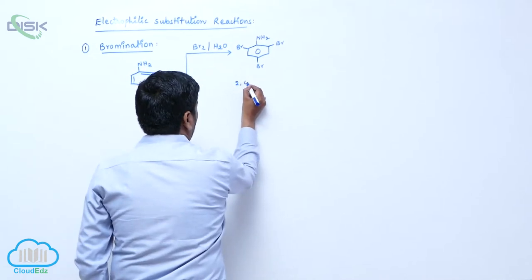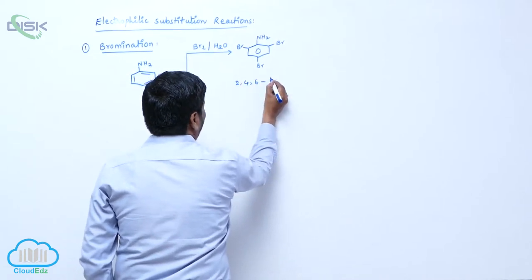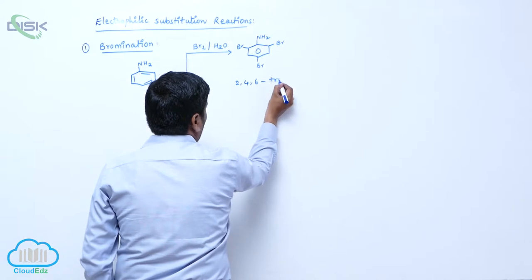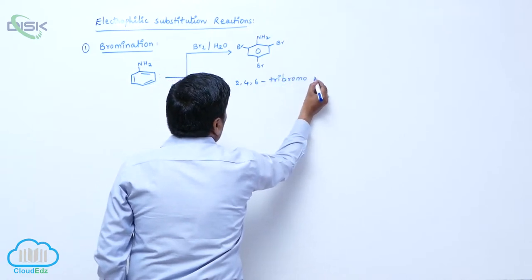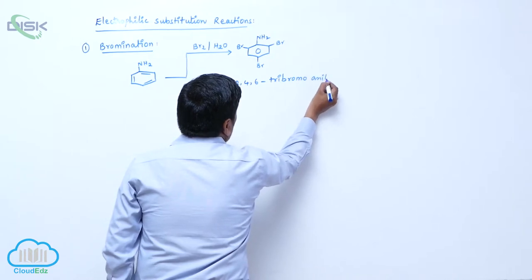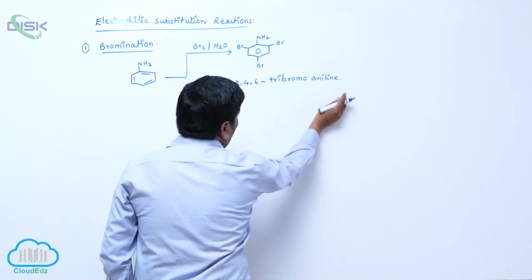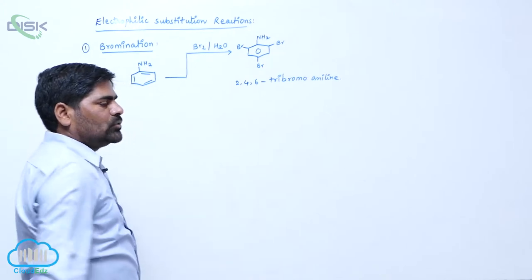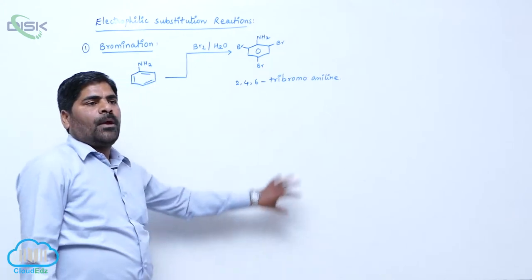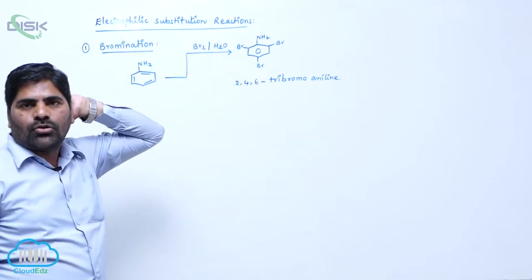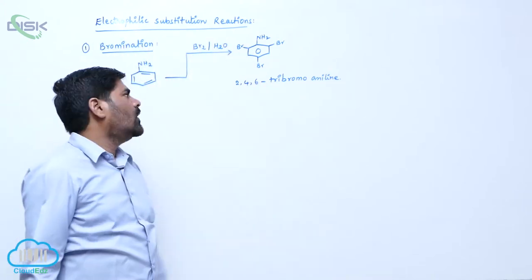2,4,6 tribromoaniline forms because the amino group can act as a stronger electron releasing group. That is the reason why in protic solvent medium bromination takes place at ortho position, para position and ortho position.